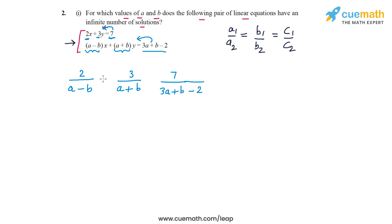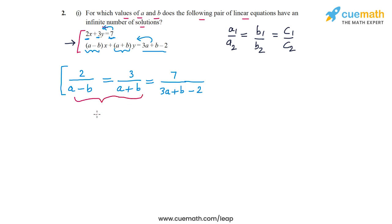Now what we want is all three ratios to be equal, and from this equality we have to find the values of A and B — those values for which these three ratios are equal. Let's first work with the equality: 2 by (A minus B) equal to 3 by (A plus B).